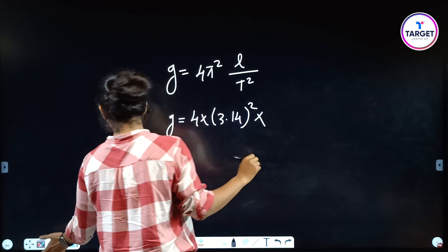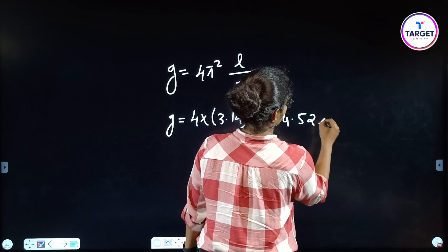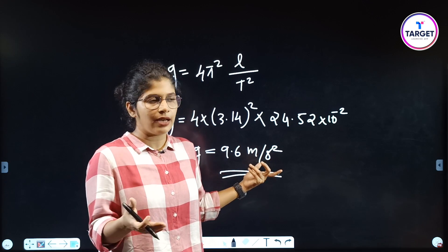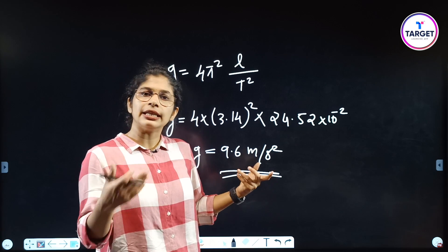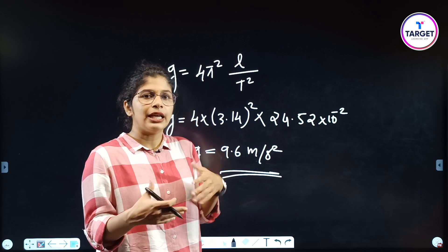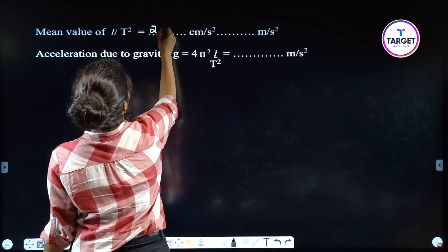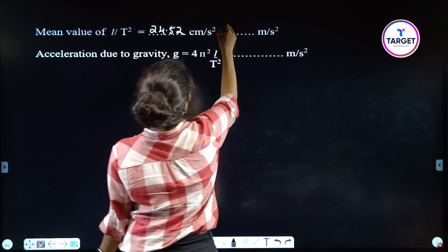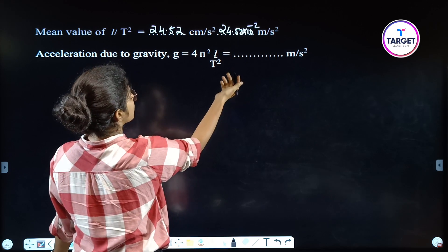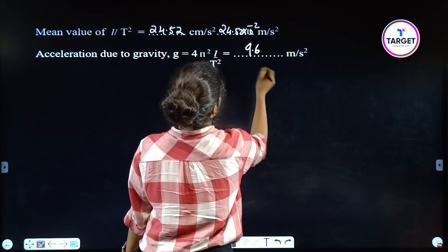The mean of L/T² is 24.52. So g = 4π² × 24.52 × 10⁻² = 9.6 m/s². Therefore g = 9.6 m/s².